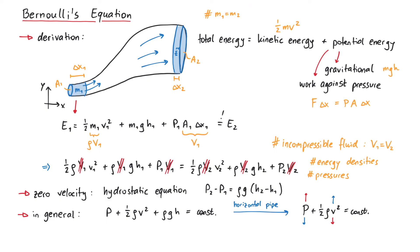By the way, these two terms also have their own name. P is called the static pressure, while one-half rho v squared is called dynamic pressure. But that's pretty much it for this video. Thanks for watching.